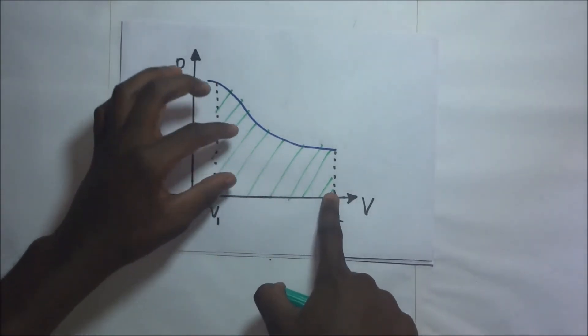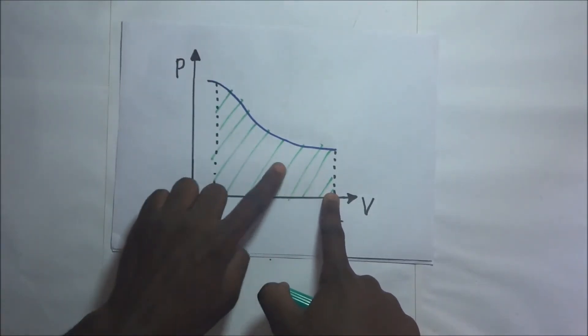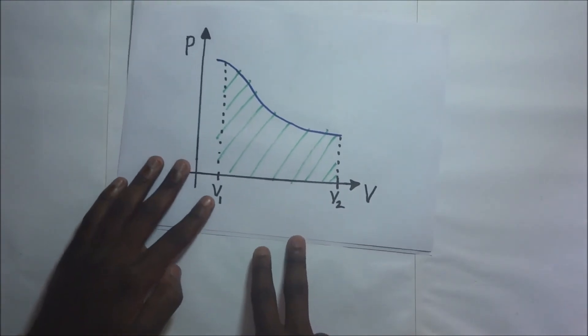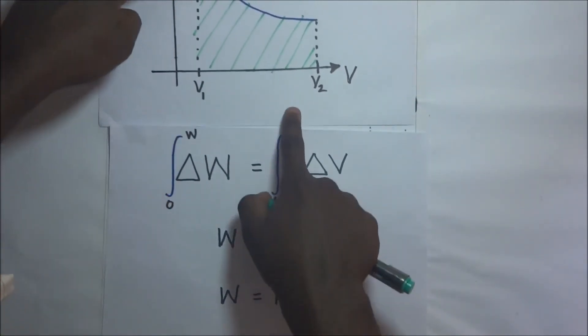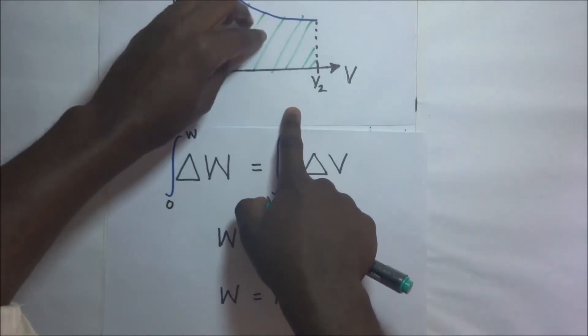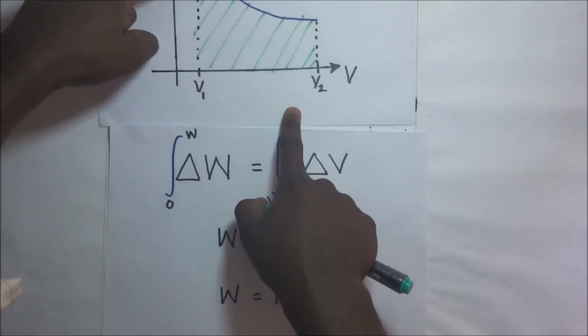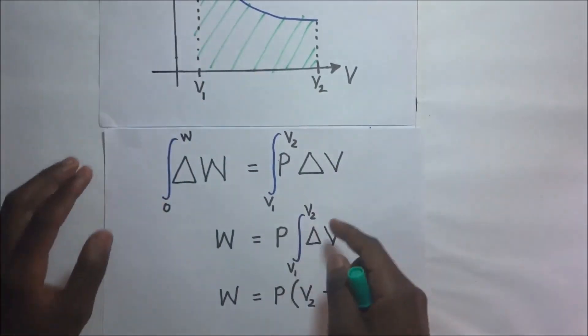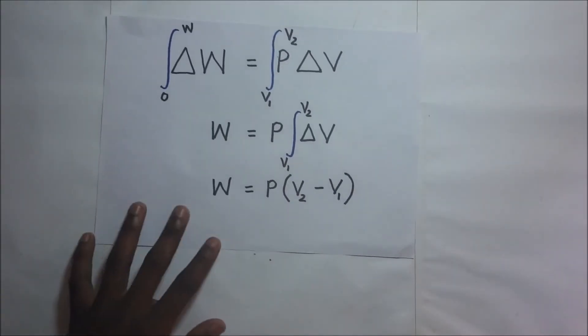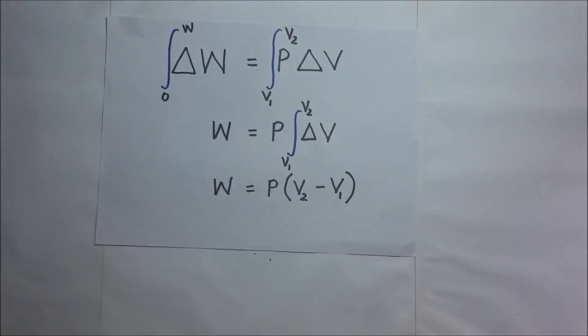When we find the area under the PV diagram, this area is what is giving us the work done. So in simple terms, if you look at this we are actually trying to find the integral or the area under this graph from V1 to V2. So basically that's the expression for work done by a gas that is expanding.